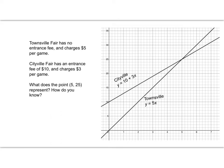This can actually be really helpful in real life. So for example, let me read you this word problem. It says that the Townsville fair has no entrance fee and it charges $5 per game. The Cityville fair has an entrance fee of $10 and charges $3 per game. What does the point 5, 25 represent? And how do you know?